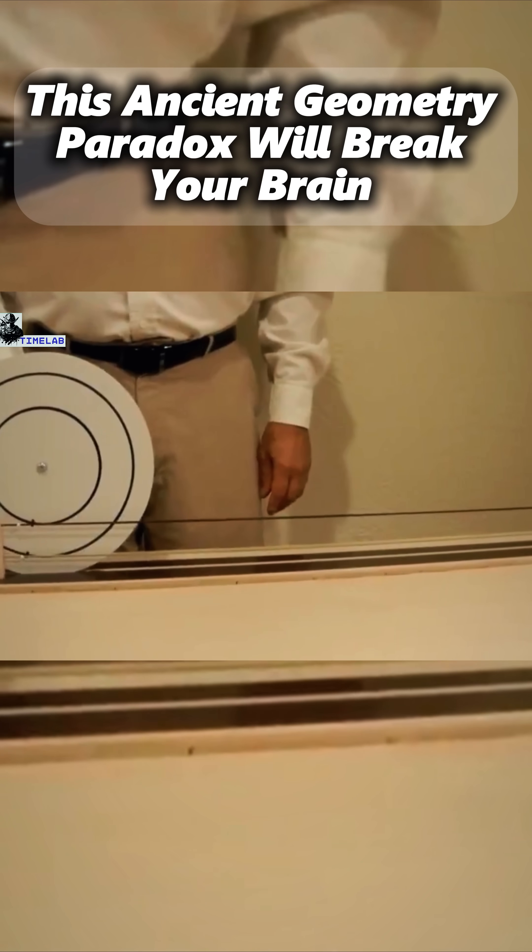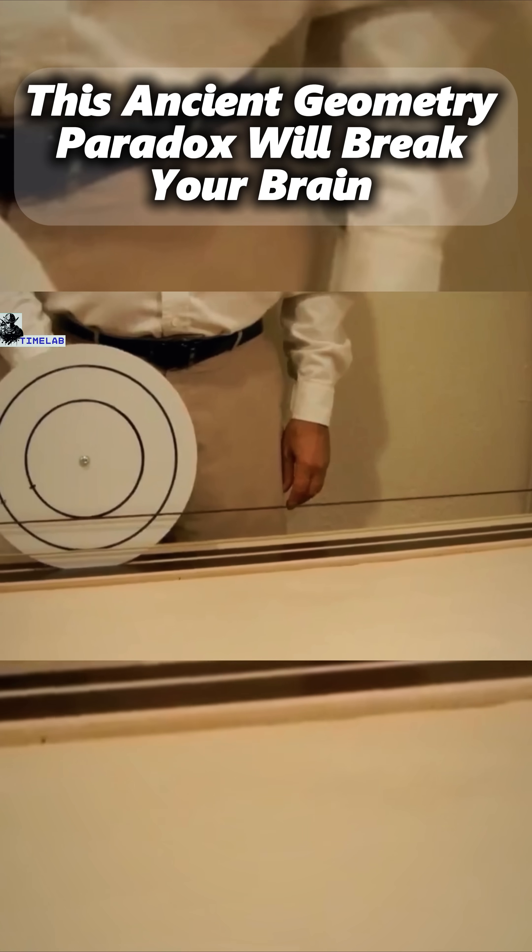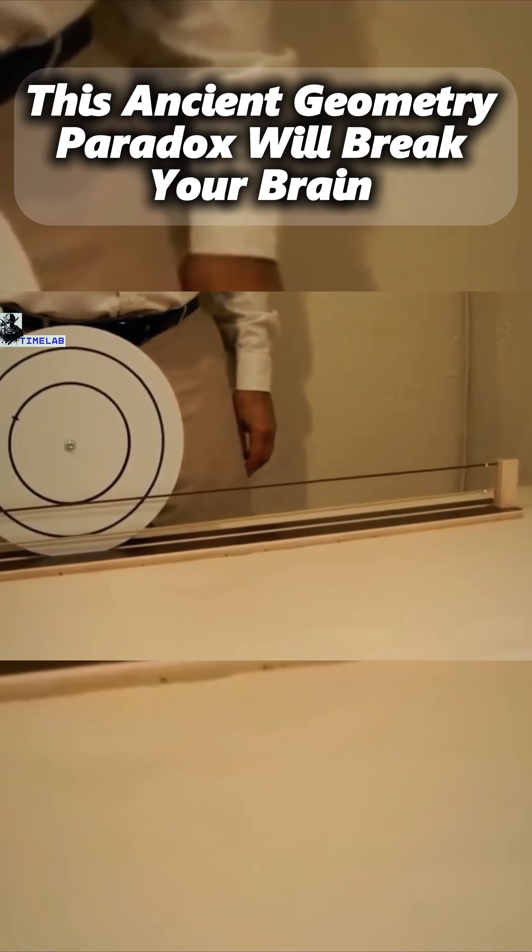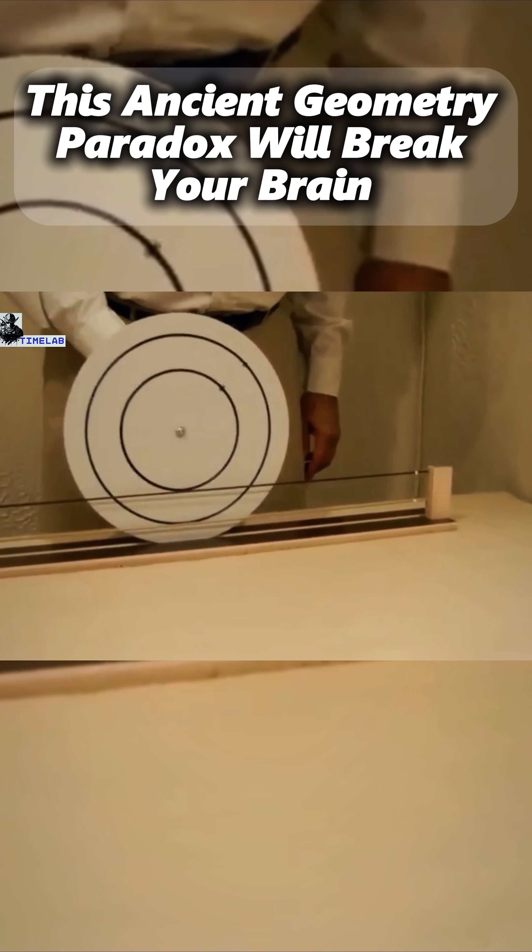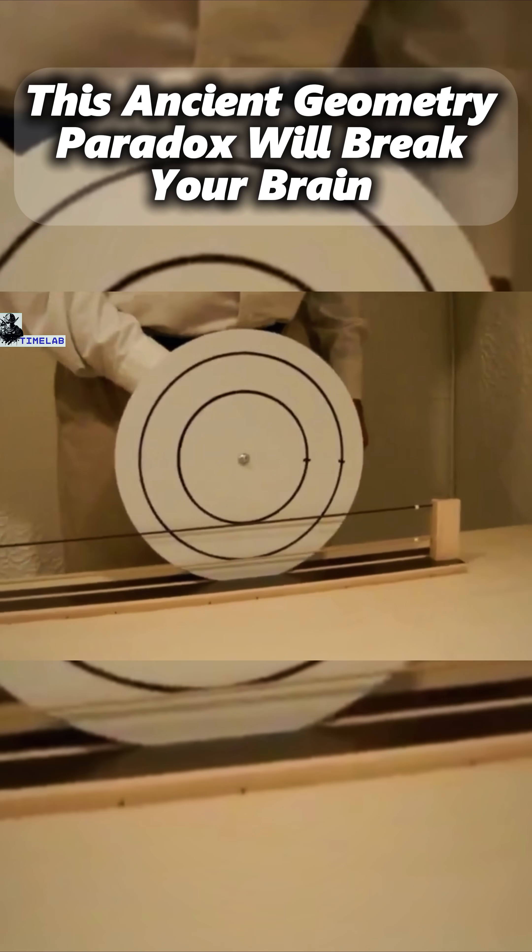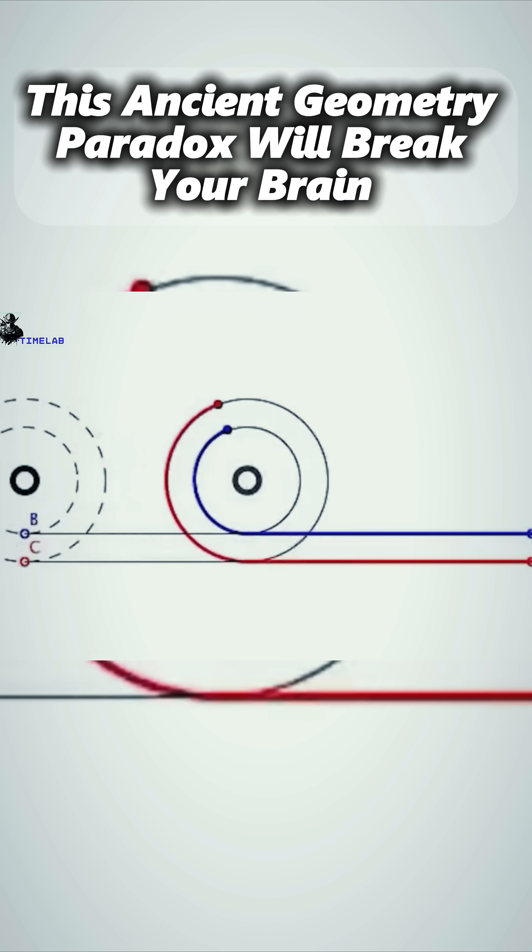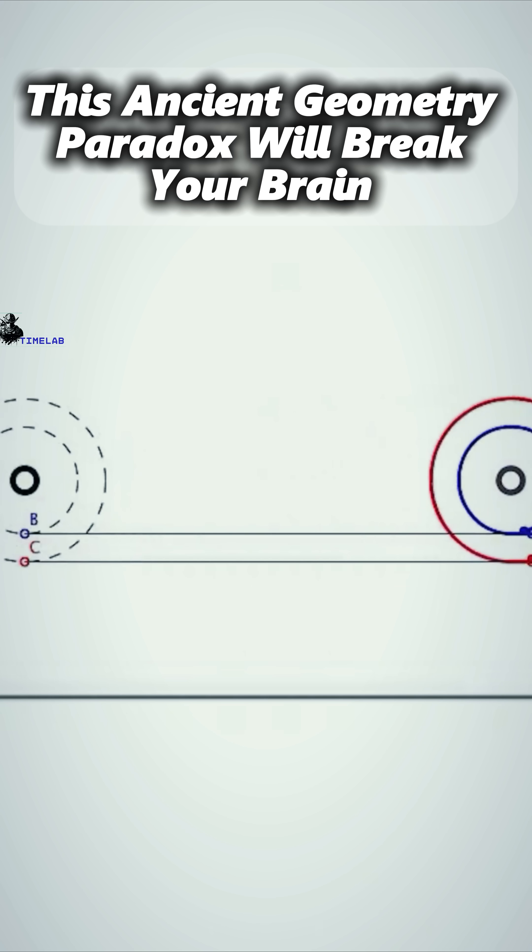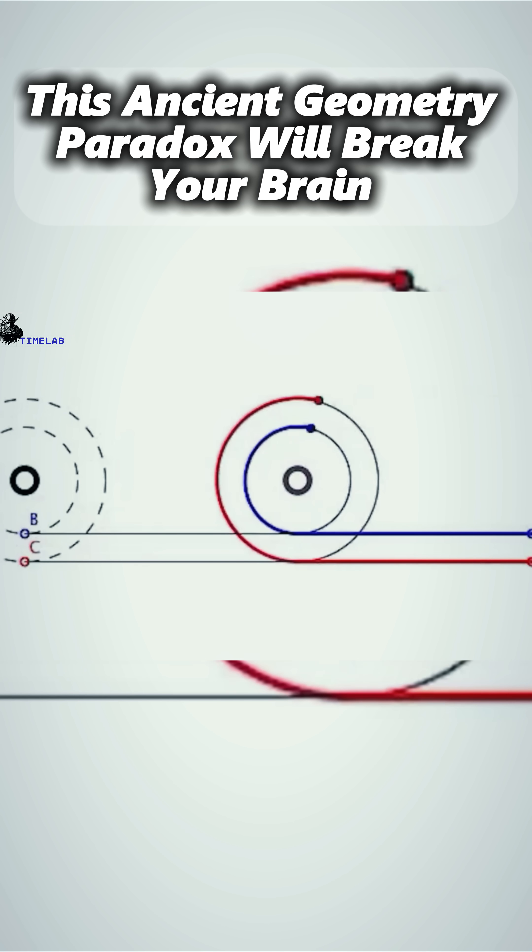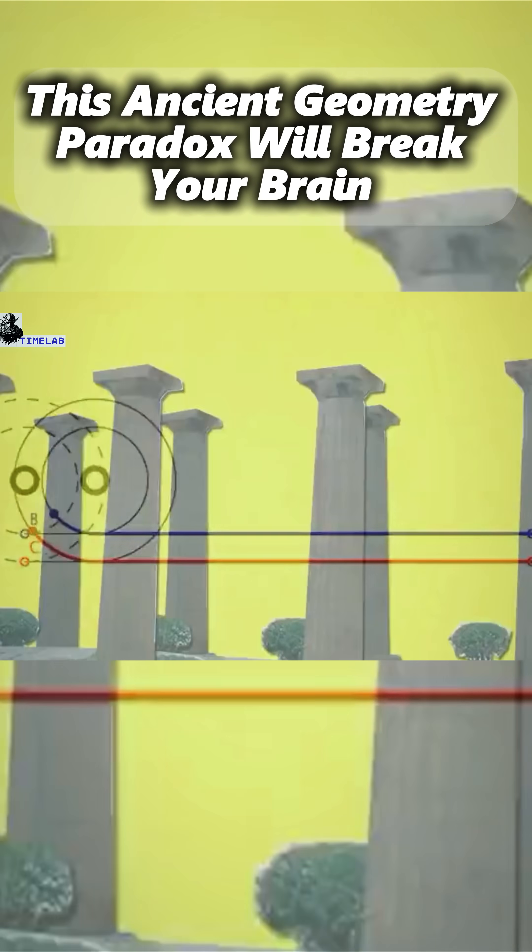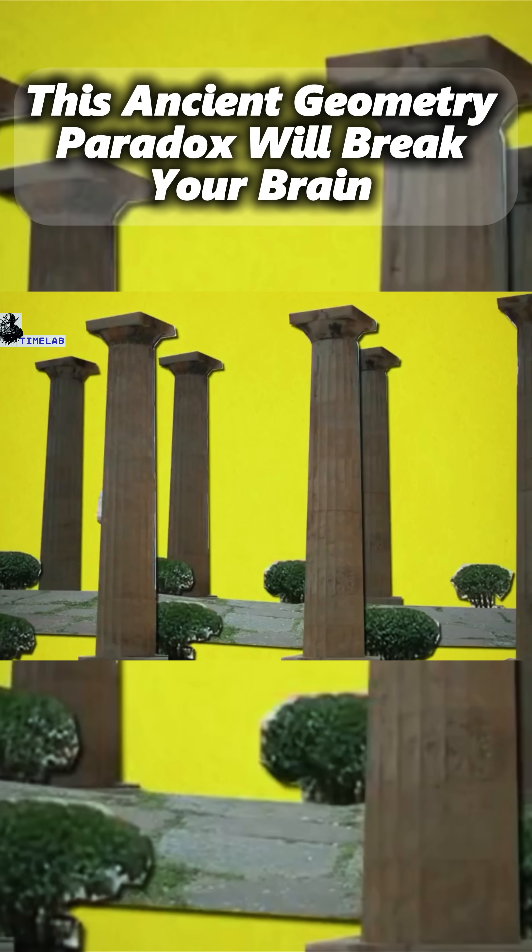Imagine a disc with two concentric circles of different sizes. When the larger circle rolls one full rotation, the smaller inner circle also seems to roll one full rotation. But here's the catch. The two circles obviously have different circumferences. So how could they both travel the same distance?